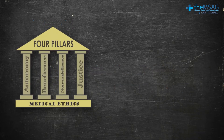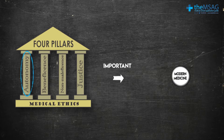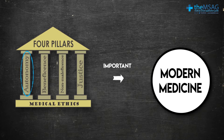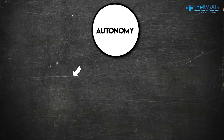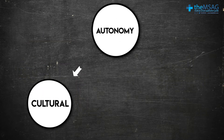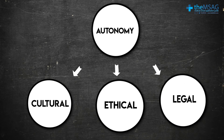Our opening scenario shows how important the principle of autonomy is in modern medicine, and how important it is that a person has complete control over their own body. Autonomy includes the cultural, ethical and legal reasons why I would not be able to force you to donate that blood to my sister, even for the purpose of saving another life.